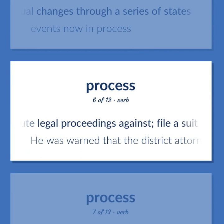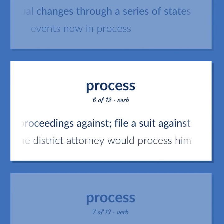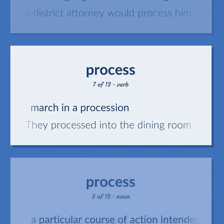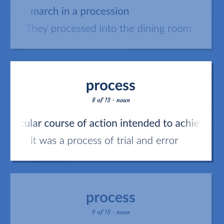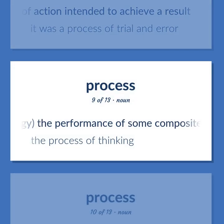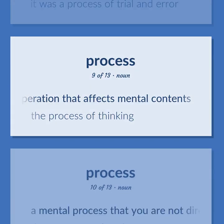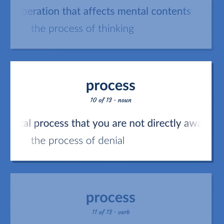Institute legal proceedings against; file a suit against — he was warned that the district attorney would process him. March in a procession — they processed into the dining room. A particular course of action intended to achieve a result — it was a process of trial and error. Psychology: the performance of some composite cognitive activity; an operation that affects mental contents — the process of thinking. A mental process that you are not directly aware of — the process of denial.